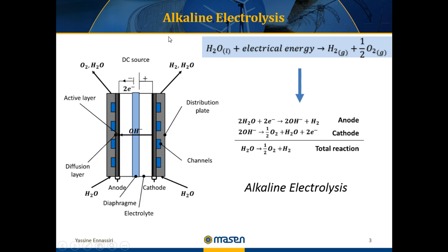This is an example of an electrolysis cell for alkaline electrolysis technology. It is made up principally of an ionic conductor called electrolyte, specifically an alkaline electrolyte, which is aqueous potassium hydroxide. It also has an active layer at which the redox reactions occur, at both cathode and anode. Hydrogen is produced at the anode level and oxygen at the cathode level. There is also a current and material collector enabling electricity supply and collection of reagents and products.